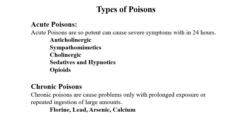For acute poisons, we regularly use medicines such as Anticholinergics, Sympathomimetics, and Cholinergics. Chronic poisons include fluoride, arsenic, and iron.